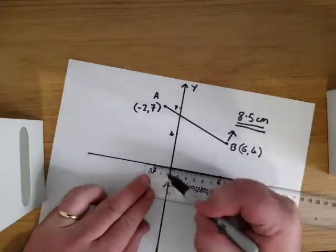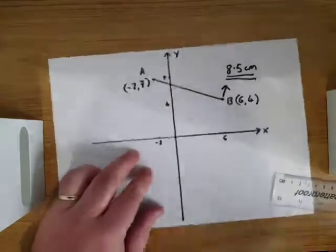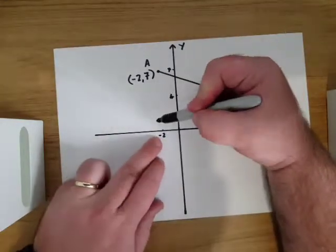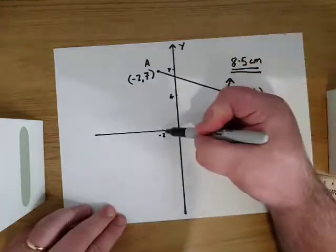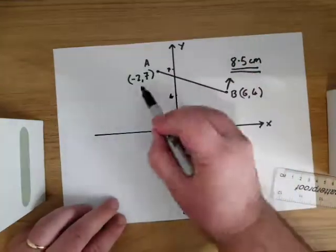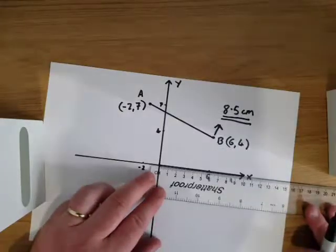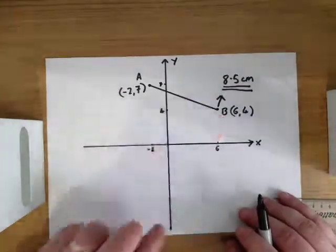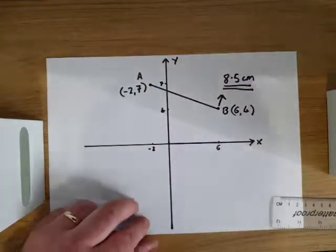So there we have it, 2 centimeters gives us -2. Point A is -2, that's 2 units to the left, and 7, that's 7 positive units up. And point B is 6 units to the right and 4 units up here. So point A and point B,